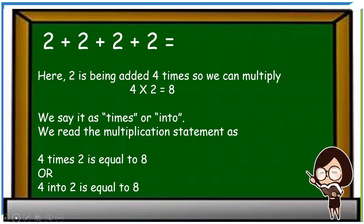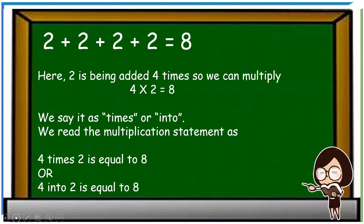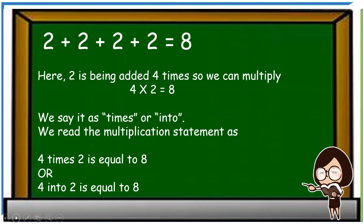Two plus two plus two plus two is equal to eight. Here, two is being added four times, so we can write four into two is equal to eight. We say it as 'times' or 'into'. We read the multiplication statement as: four times two is equal to eight, or four into two is equal to eight.